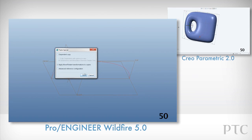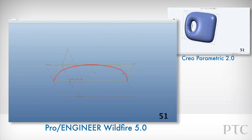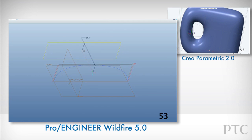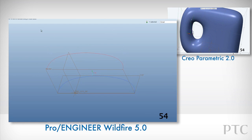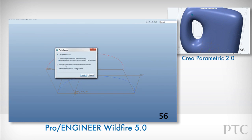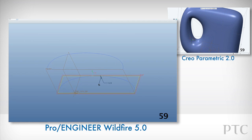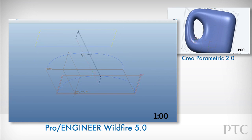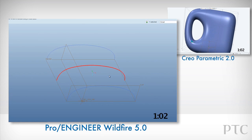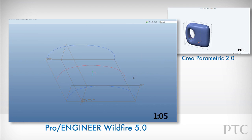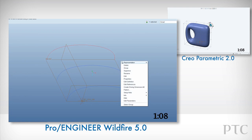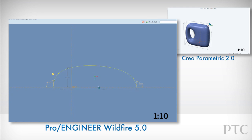In Pro Engineer Wildfire, we would have created individual curves and then blended surfaces between them, having to manually control the connections and tangency between those surfaces. Creating this type of geometry in Pro Engineer Wildfire is very time consuming, and during this comparison we'll show the key stages of creating a similar shape, but not every step, as it would simply take too long.